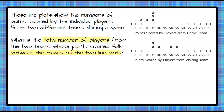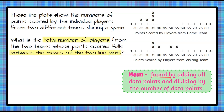That means we have to find the means, or the average, for each line plot. We know to find the mean we add all of the data points and divide by the number of data points. So let's start with our home team right here — these data points. We have five pieces of data plotted on this line plot, so we're going to add up all of these data points.